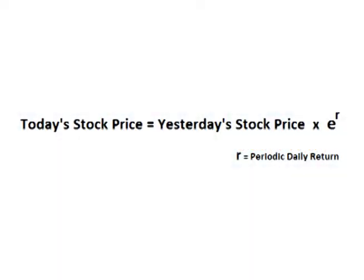Today's stock price equals yesterday's price multiplied by the exponential function E raised to some power. The power is the rate of change that the stock went up that day. What we want to do is find that R value for each day.